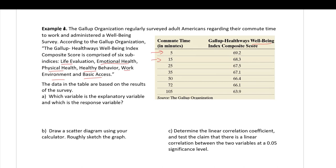Just by inspecting the data, as commute time increases, it looks like well-being scores start to decrease. This is a pretty small sample, probably cherry-picked to make a point. The person who takes almost two hours to commute has a lower score than the person who takes five minutes. Commute time alone won't determine your well-being, but it contributes something to it.